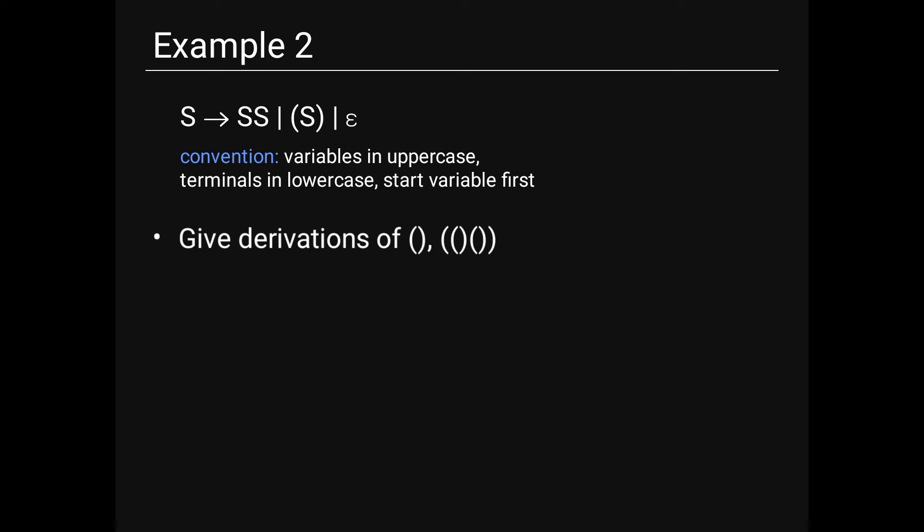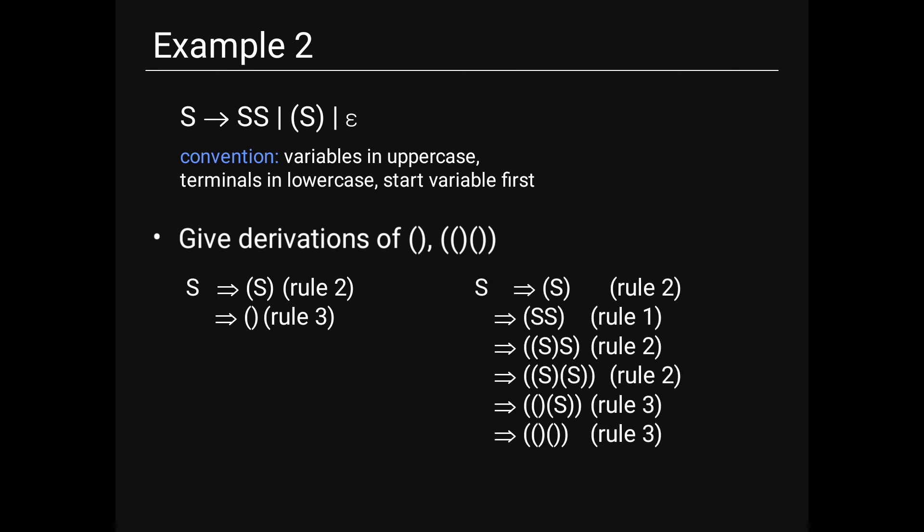Example 2: S → SS | (S) | ε. Variables are in uppercase, terminals in lowercase. Start variable is S. Derivation of (): S → (S) → (). Derivation of (()()): S → SS → (S)S → (SS)S → ((S)(S))... following rules 1, 2, and 3 to produce balanced parentheses strings.